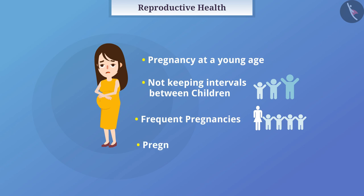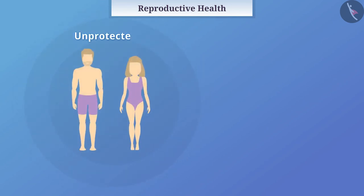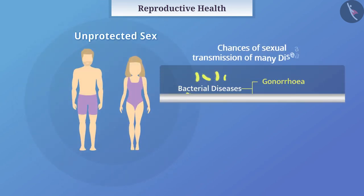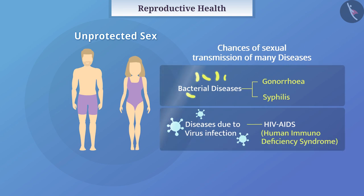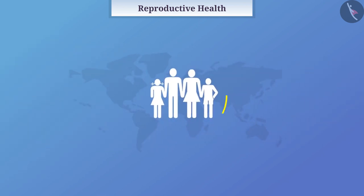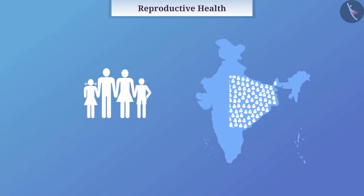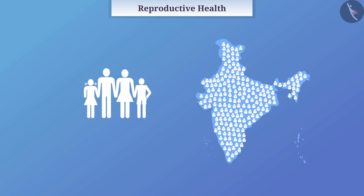If pregnancy occurs against the woman's will, then it can cause mental, physical, and financial problems. Unprotected sex also increases the chances of sexual transmission of many diseases. If there is no control over child births, there is a problem of excessive population growth, which is called population explosion.